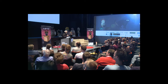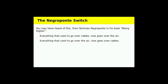You may have heard of the Negroponte switch, from Nicholas Negroponte's book Being Digital. He says everything that used to go over cables now goes over the air, and everything that used to go over the air now goes over cables. Telephone calls used to go over cables and now go over the air via radio. Television used to go over the air and now goes through cables. That was the Negroponte switch.